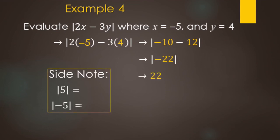Some people get confused with absolute values — it's not about switching signs, it's about opposites. The absolute value of 5 is positive 5. The absolute value of negative 5 is also positive 5. Whatever comes out of the absolute value is always going to be positive. The formal definition: absolute value is how far the number is from 0. 5 is 5 away from 0; negative 5 is also 5 away from 0.